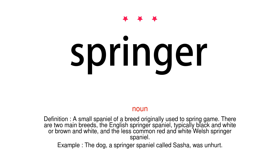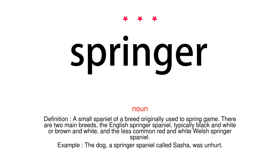There are two main breeds: the English Springer Spaniel, typically black and white or brown and white, and the less common red and white Welsh Springer Spaniel. Example: The dog, a Springer Spaniel called Sasha, was unhurt.